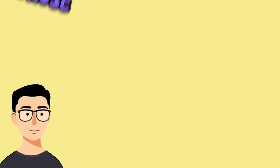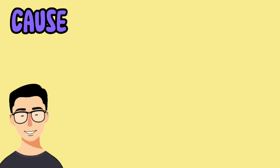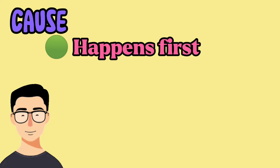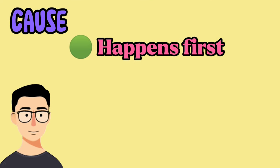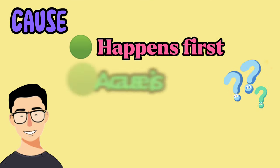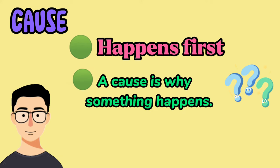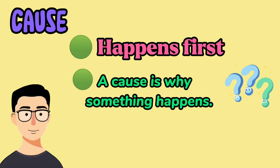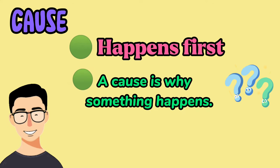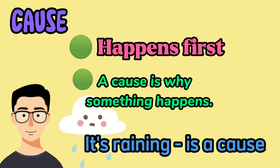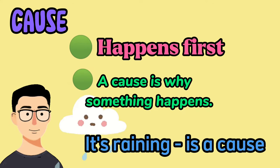A cause happens first. A cause is why something happens. For example, it's raining is a cause.